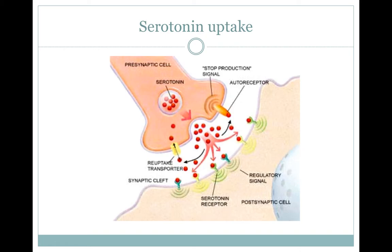When molecules such as MDMA are present, the function of the transporters is blocked and serotonin builds up in the hypothalamic synapses, which essentially depletes serotonin stores after prolonged use. This causes the depression and panic attacks that some users experience after taking ecstasy. MDMA also causes an increase in dopamine levels within the prefrontal cortex in a similar inhibitory manner.